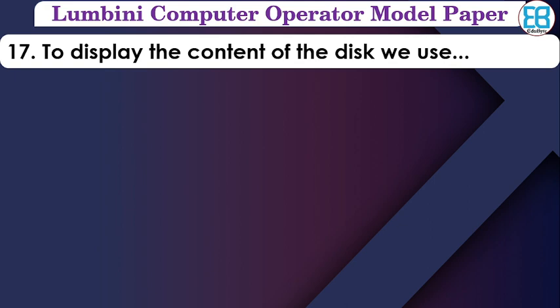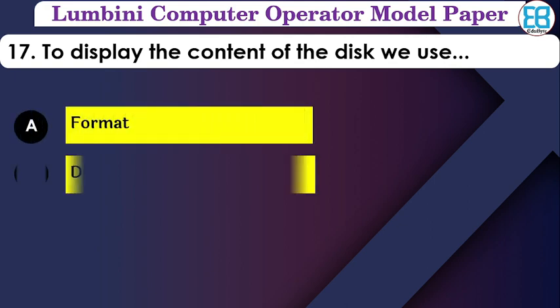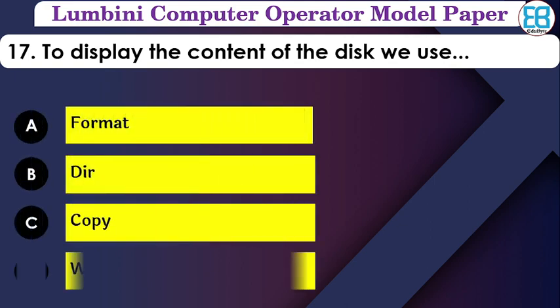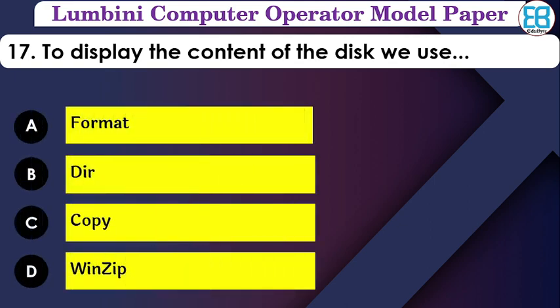To display the content of a disk, which command is used? The options are: format, DIR, copy, zip. The correct option is DIR — it displays the contents of a disk.